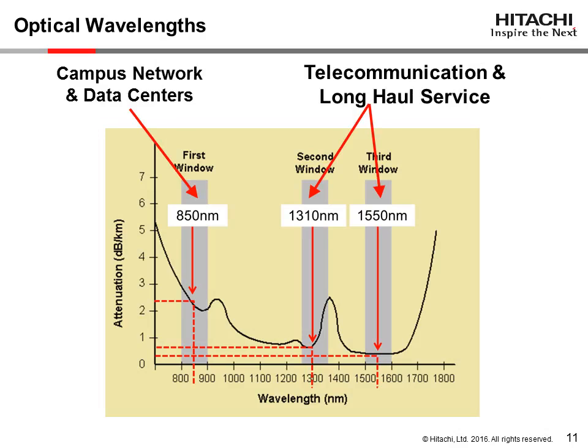The most common wavelength used in campus networks and data centers is 850 nanometers, a shorter wavelength. Long-haul telecommunication and utility service applications typically use the 1310 nanometer and the 1550 nanometer, longer wavelengths.